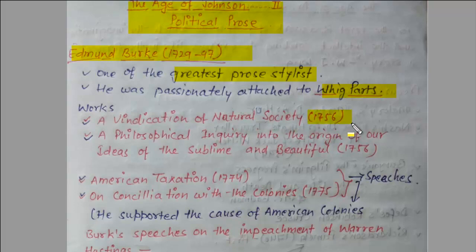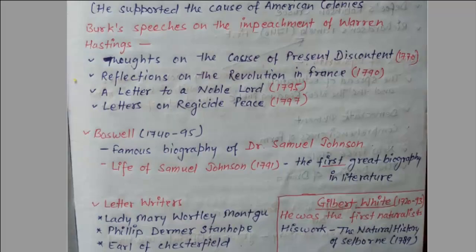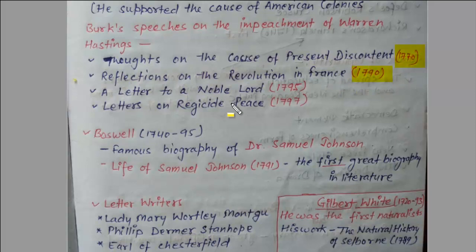His important works include: 'Vindication of Natural Society' published in 1756; 'A Philosophical Inquiry into the Origin of Our Ideas of the Sublime and Beautiful' in 1757; 'American Taxation' in 1774; 'On Conciliation with the Colonies' in 1775 — both speeches supporting the American colonies. Also: 'Thoughts on the Cause of the Present Discontents' in 1770; 'Reflections on the Revolution in France' in 1790; 'A Letter to a Noble Lord' in 1795; and 'Letters on a Regicide Peace' in 1797.